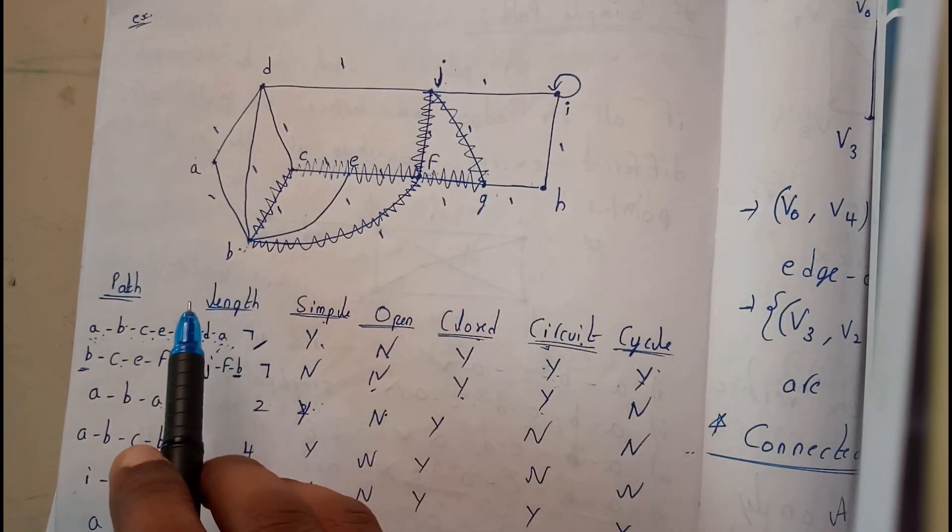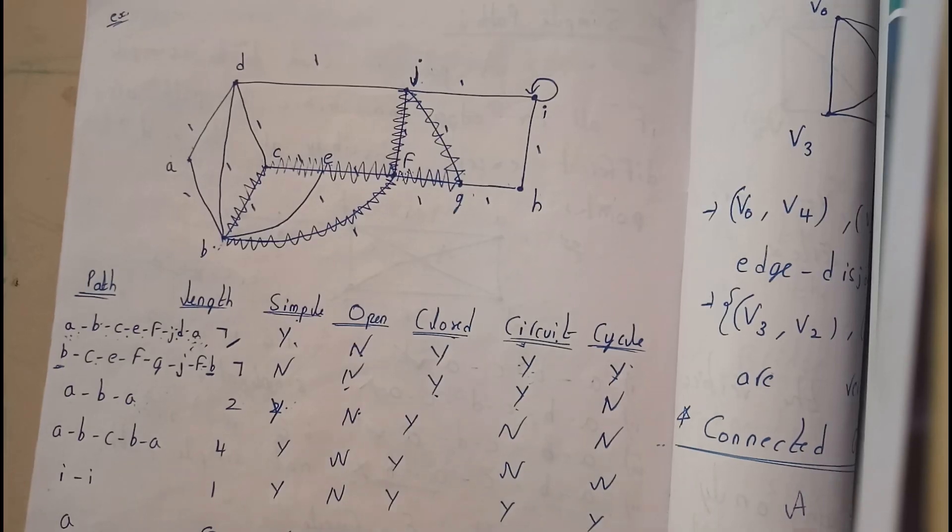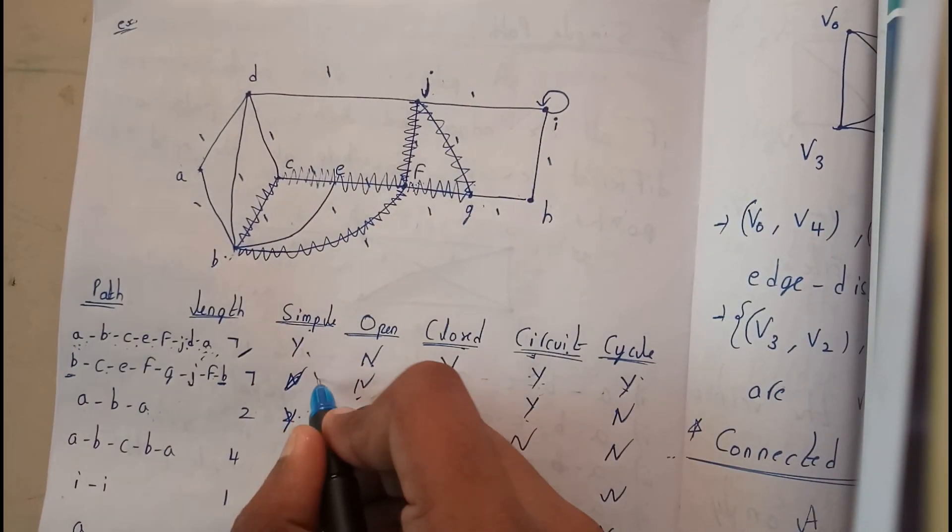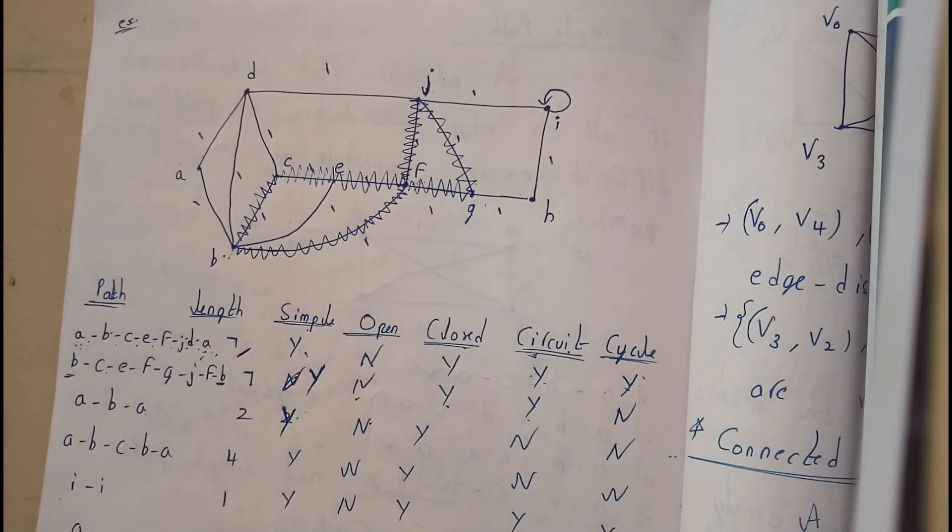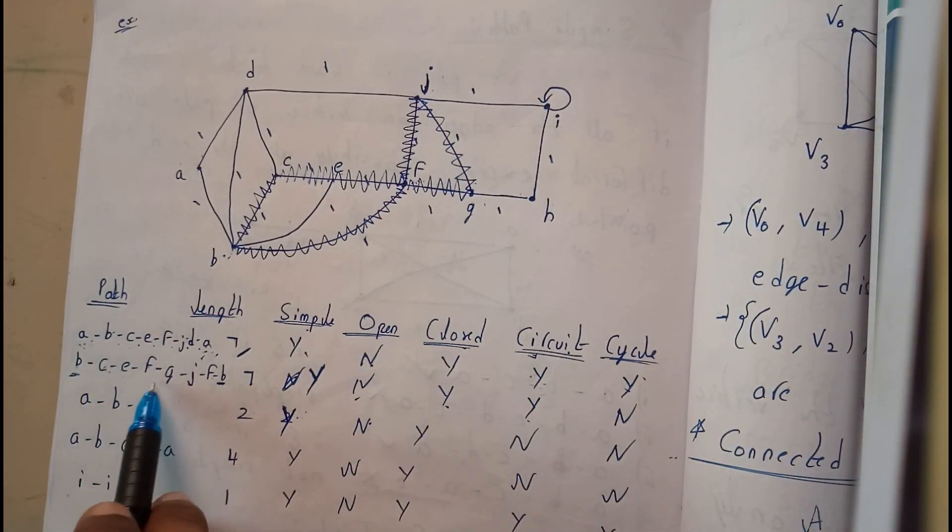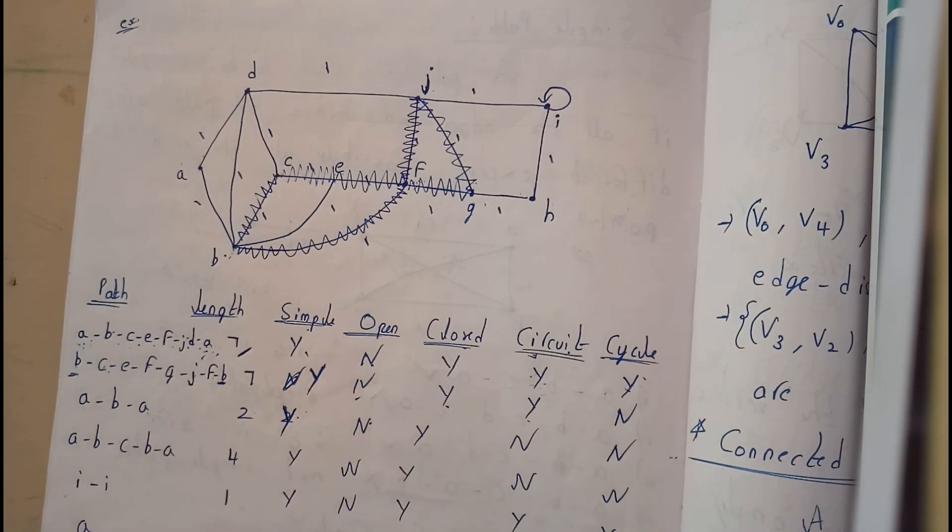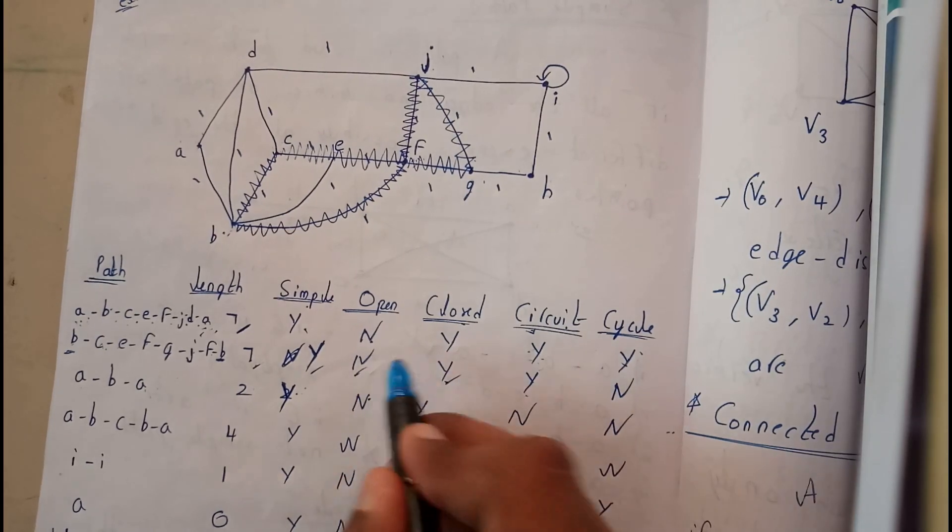Are there any parallel edges? There are no parallel edges, so this is a simple graph. And the length: 1, 2, 3, 4, 5, 6, 7. Length is 7 and it is a simple graph and it is closed, not an open one.